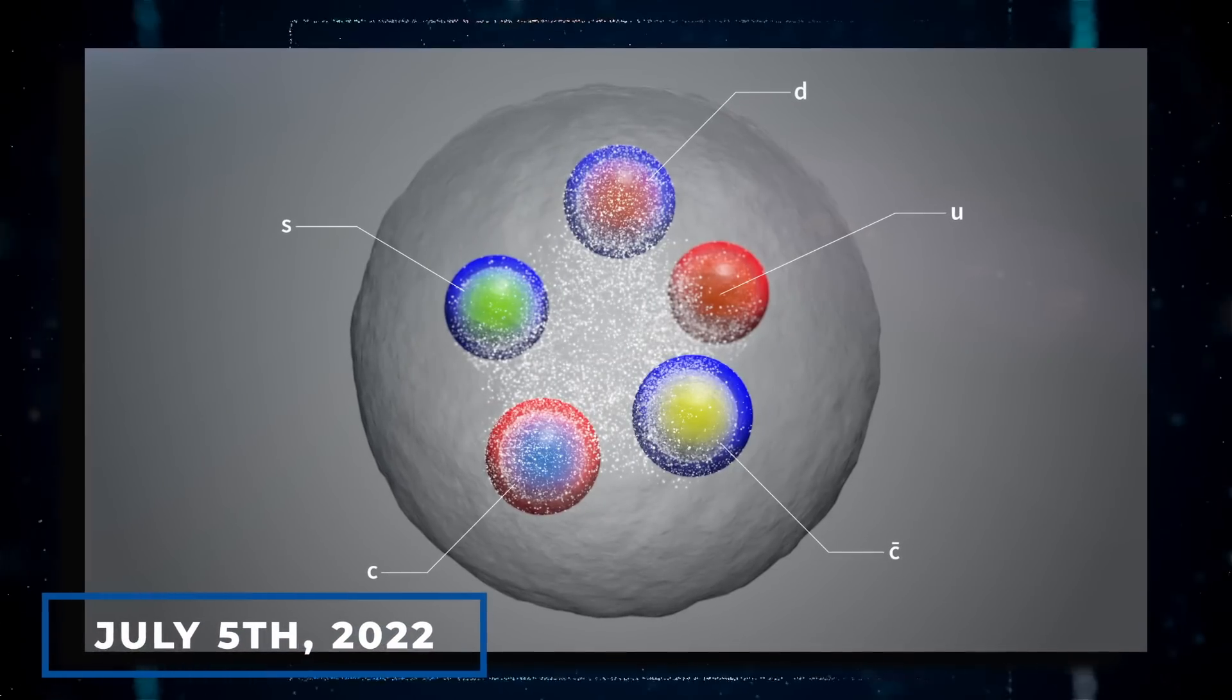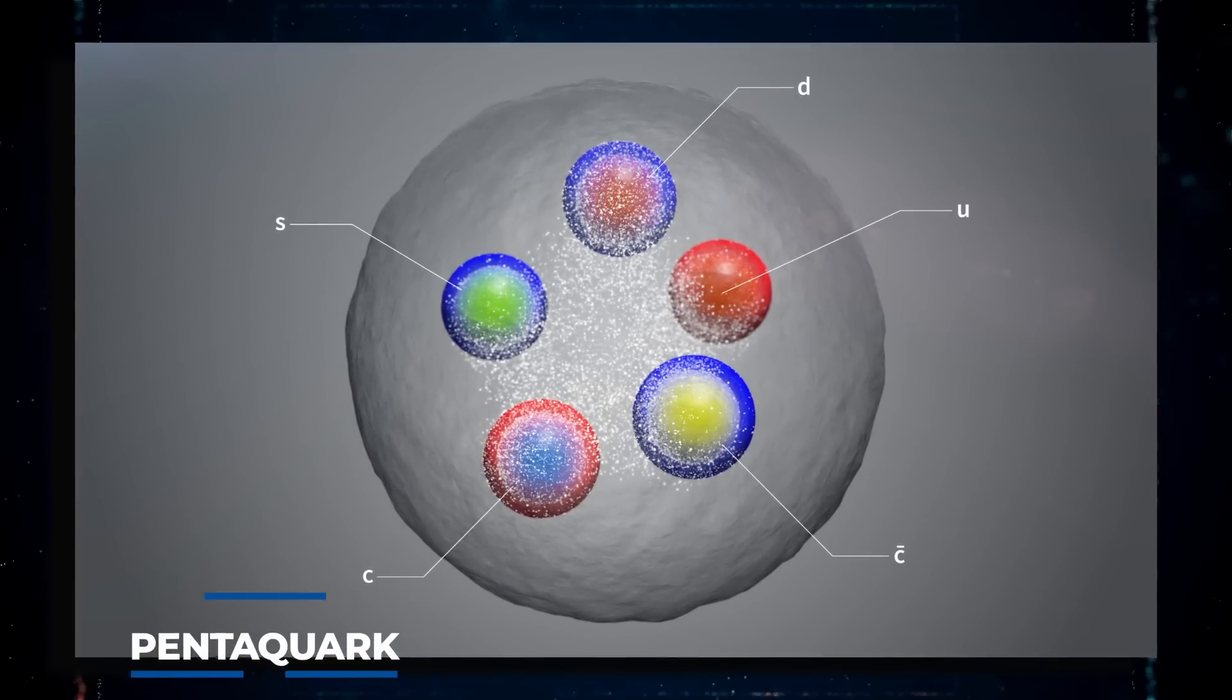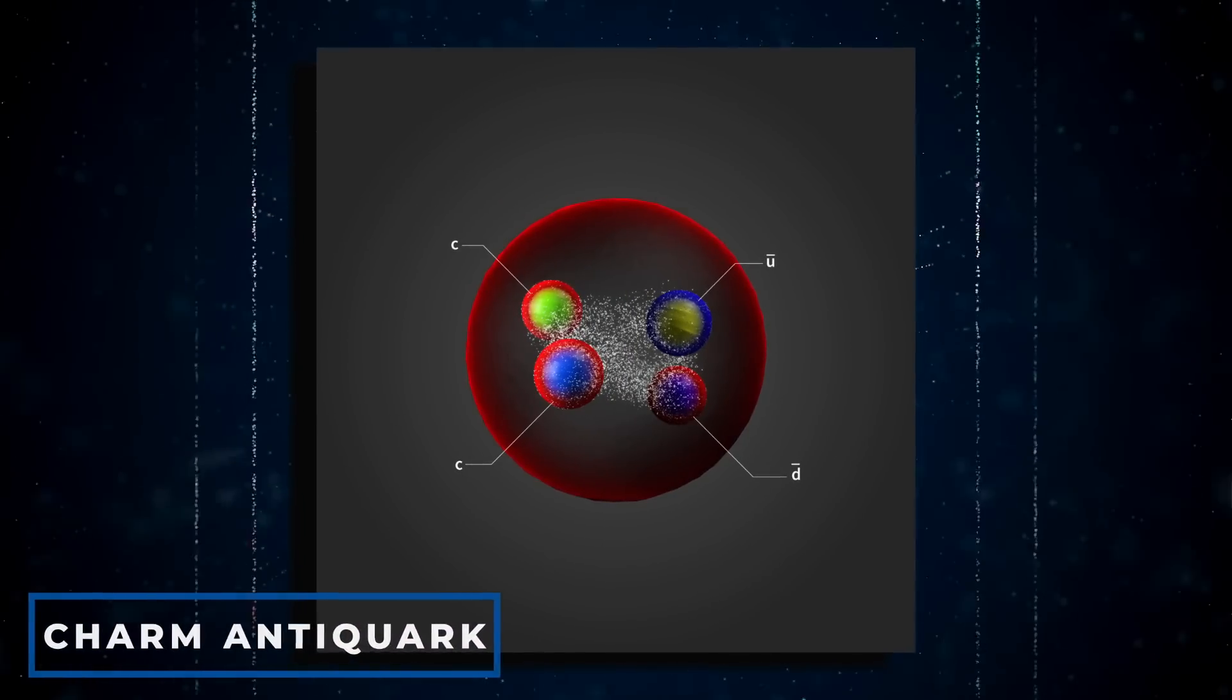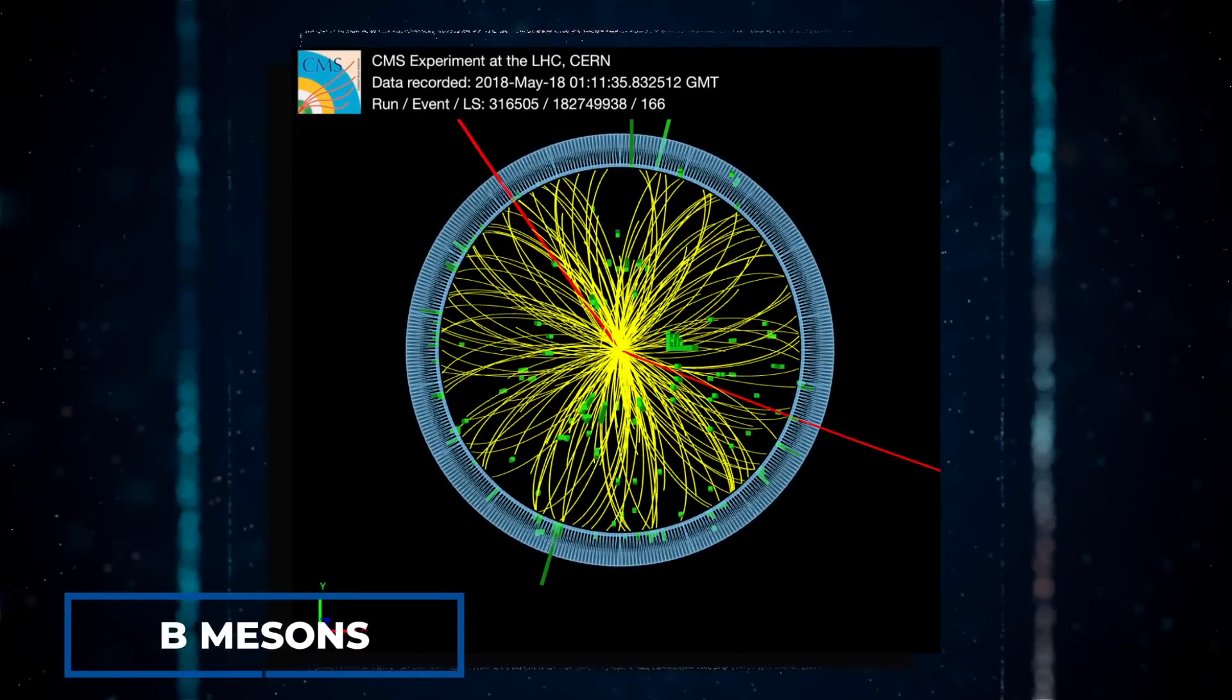Since March 2021, the LHC collision experiments have discovered around 59 new hadrons in data acquired from the Collider's first two runs. On July 5, 2022, it was revealed that a new sort of pentaquark, composed of a charm quark, a charm antiquark, an up, a down, and a strange quark, was discovered while studying the decays of charged B mesons.